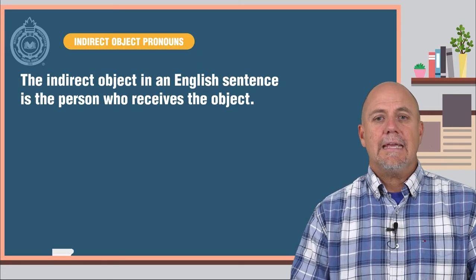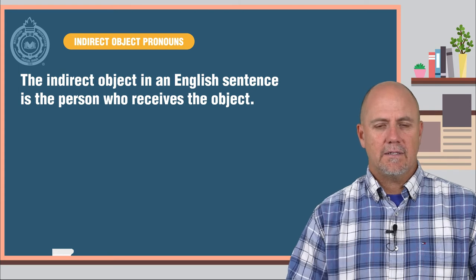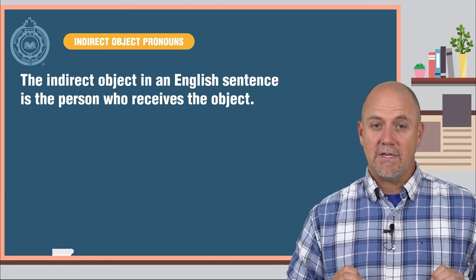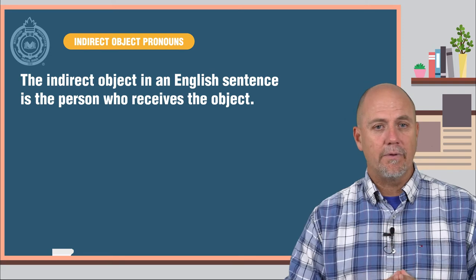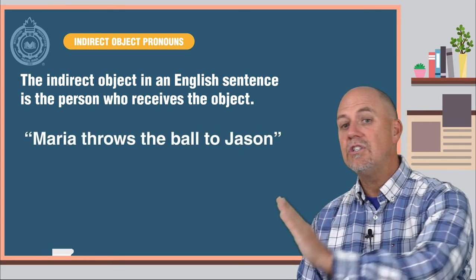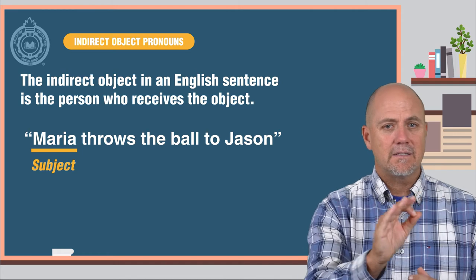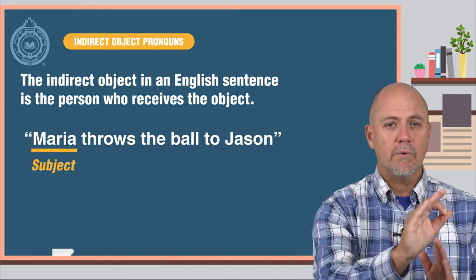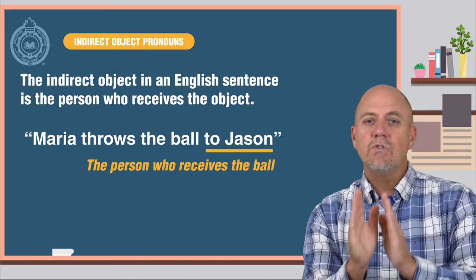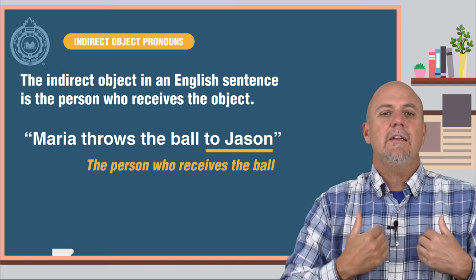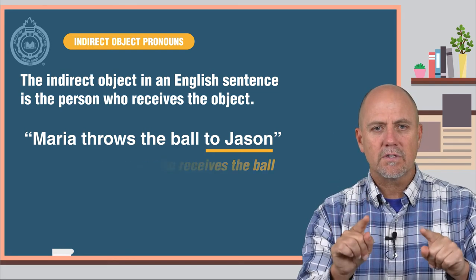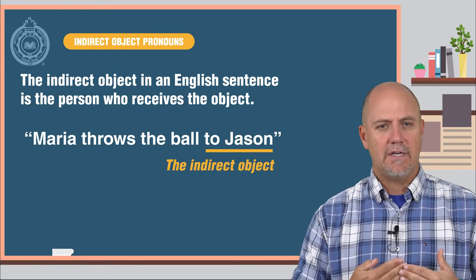The indirect object in an English sentence is the person who receives the object. Here are some examples. Maria throws the ball to Jason. In this sentence, the subject Maria throws the ball — the object — to Jason, the person who receives the ball. In English, this person is called the indirect object.